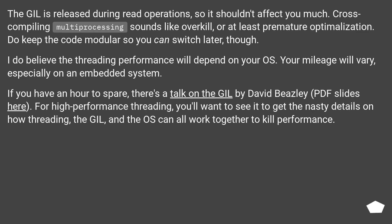The GIL is released during read operations, so it shouldn't affect you much. Cross-compiling multiprocessing sounds like overkill, or at least premature optimization. Do keep the code modular so you can switch later, though.